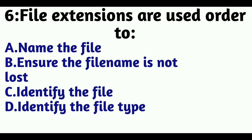Question 6: File extensions are used in order to — Option A: Name the File, Option B: Ensure the File Name is not lost, Option C: Identify the File, Option D: Identify the File Type. The answer is Option D, Identify the File Type.